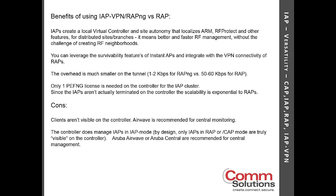We can leverage the survivability feature — Instant APs can function without a WAN or internet connection, providing access to local printers and local compute resources in the event of a WAN or VPN outage. The overhead on the tunnel is much smaller because we're not sending all of the ARM calculation data across the tunnel. There are also reduced licensing requirements on the controller because we're only bringing back a single tunnel for a branch, regardless of the number of Instant APs at that branch.